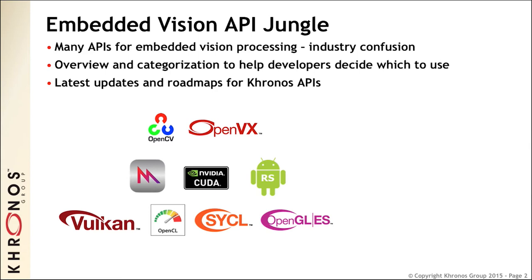I'm often asked: should I use this API or that API for vision processing in embedded and mobile? Well, that's a good question. They're not all Khronos APIs, but we're going to try and keep this legal, decent, honest, and truthful. We're going to give the straight skinny — upsides, downsides, and the status of where these APIs are today in the marketplace.